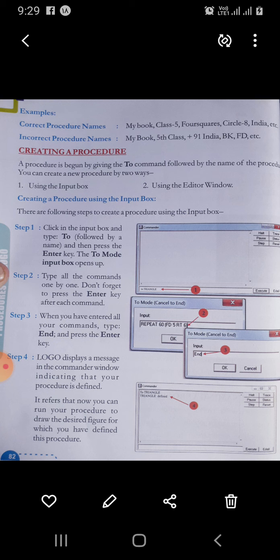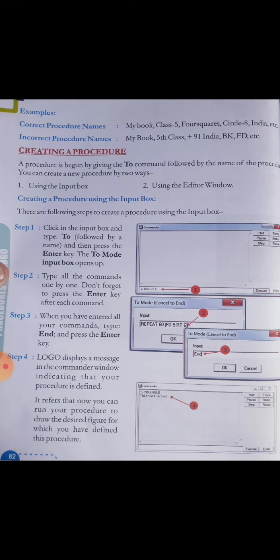Creating a procedure using the input box: there are following steps. Step one — click in the input box and type 'to', follow it by a name, and then press the Enter key. After typing the name, press Enter.